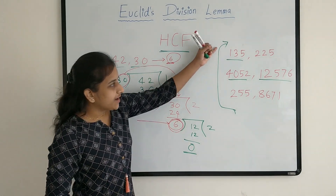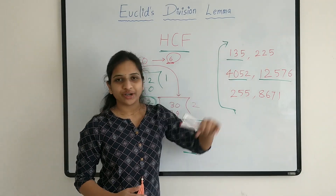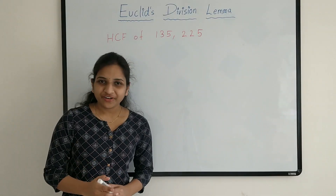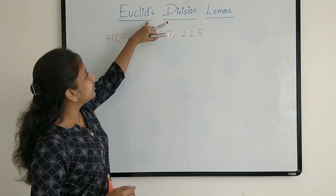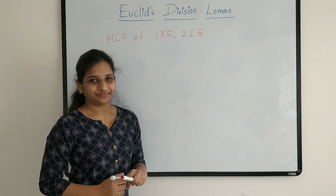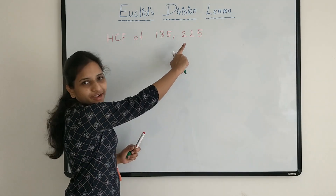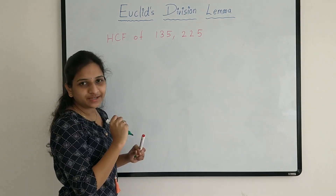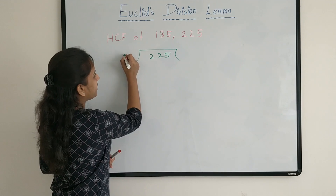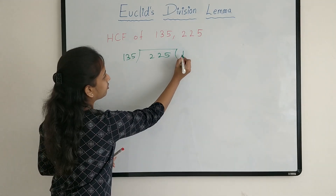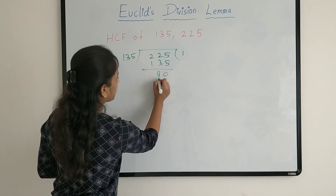Now let's find the HCF of the bigger numbers 135 and 225. To find HCF of big numbers we are going to apply Euclid's division lemma method. In this method the first step is we should divide the big number by the small number. So I am dividing 225 by 135. Quotient is 1 and the remainder is 90.